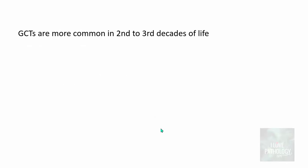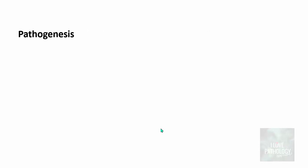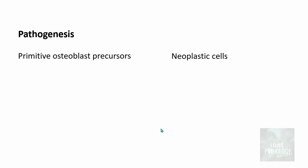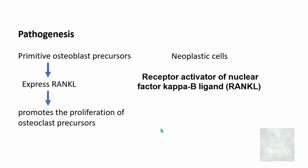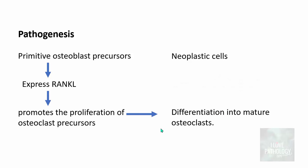These tumors are more common in the second and third decades of life and women are more commonly affected. The pathogenesis of Giant cell tumor is basically by these primitive osteoblast precursors — these are the neoplastic cells. They express RANK ligand which promotes the proliferation of osteoclast precursors and that differentiates into mature osteoclast. The tumor contains mononuclear cells — the primitive osteoblast precursors — which are the neoplastic cells, and not the Giant cells.